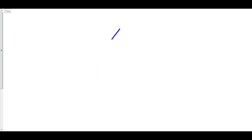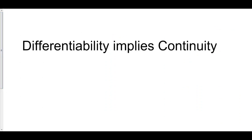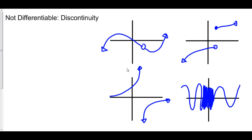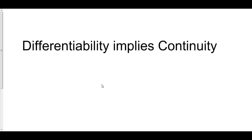This leads to an extremely important idea: differentiability implies continuity. Because a discontinuity makes a function not differentiable, if a function is differentiable it therefore can't have a discontinuity. And if a function doesn't have a discontinuity, then it is therefore continuous. So, differentiability implies continuity — if f is differentiable, then it is therefore continuous.